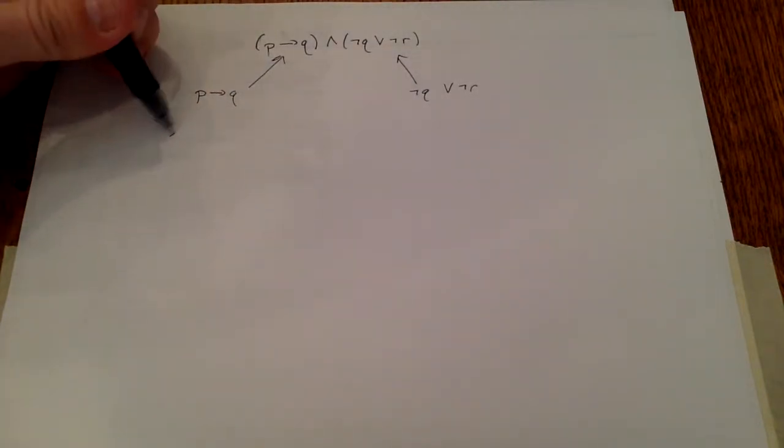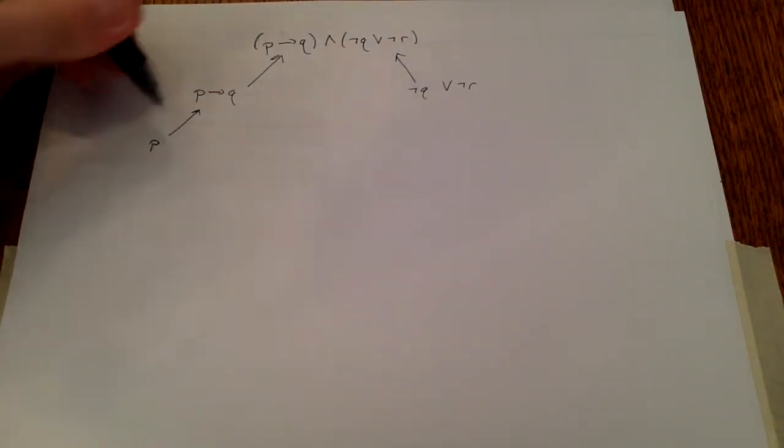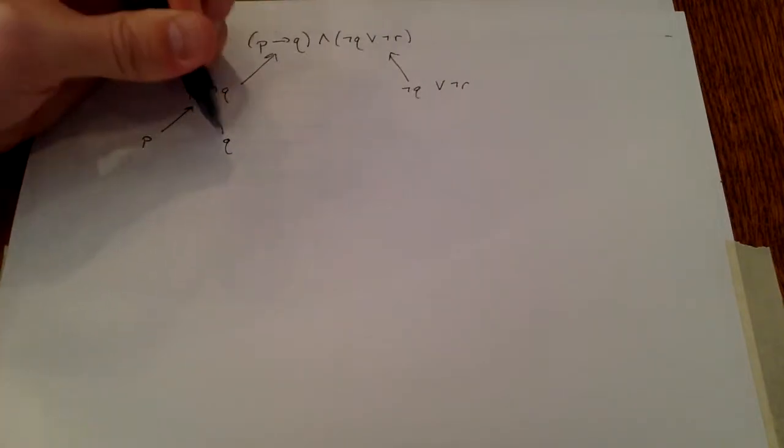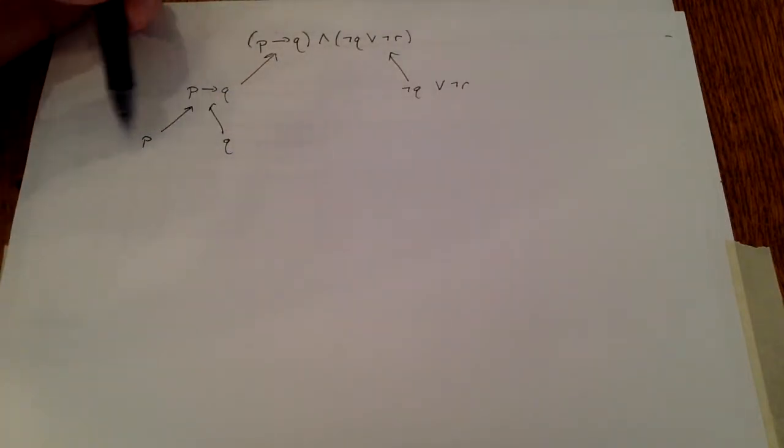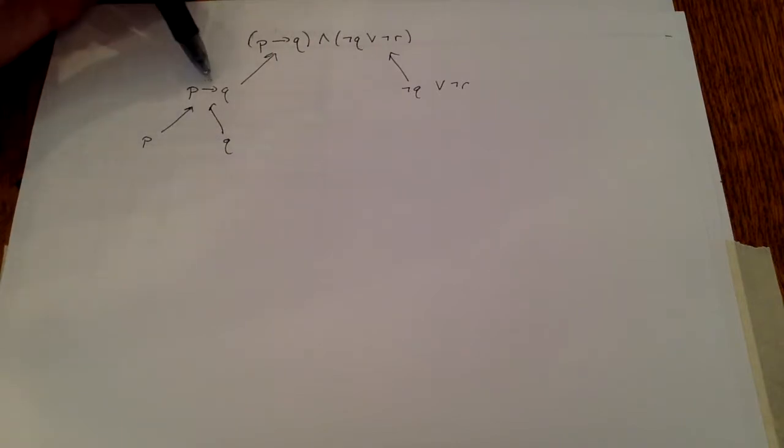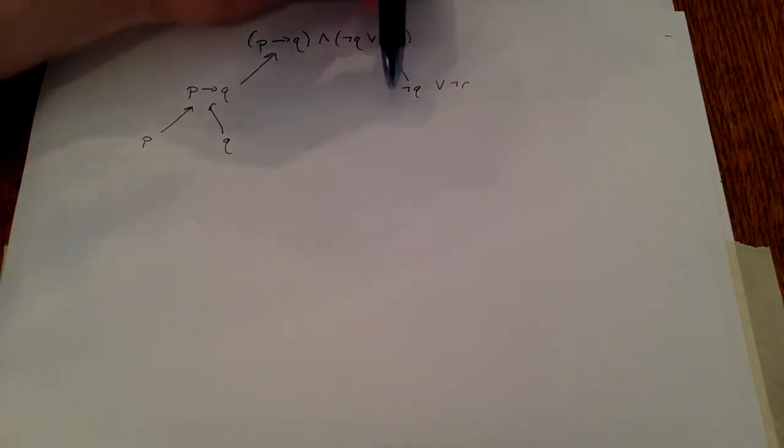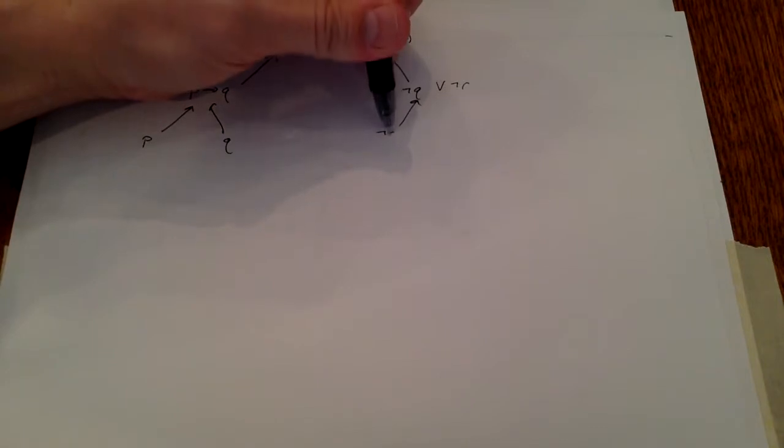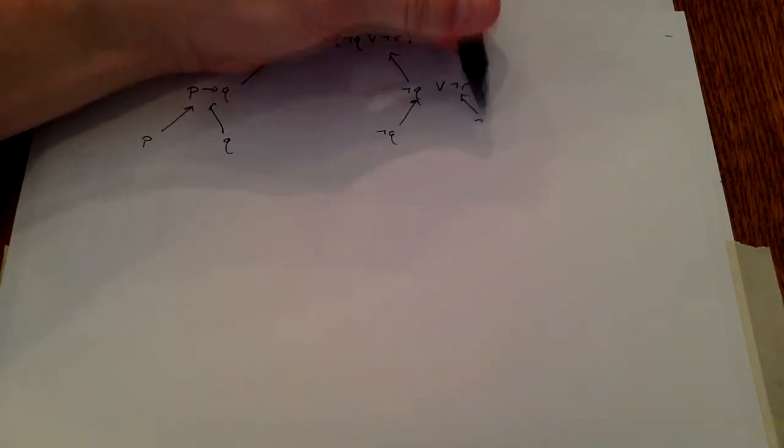When I look at the P implies Q, I see that what I have to my implies is a P and a Q, and these are each separate variables, and these things are already represented in my truth table, so I can combine these two to form this column. Over here, I see I have an or, and coming into that, I have a not Q and a not R.